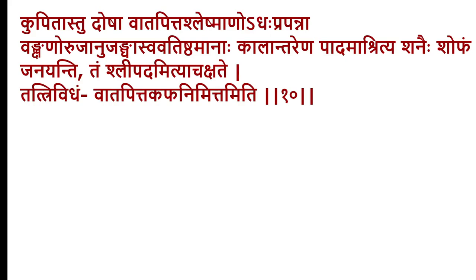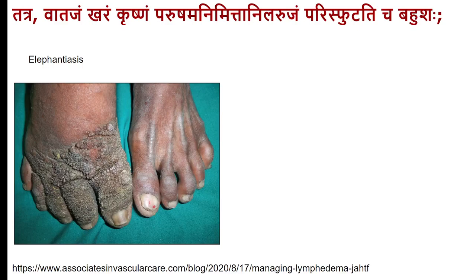Non-filarial lymphedema also has a similar course and hence should also be considered under Shlipada. Vataja Shlipada represents the later stages where the skin becomes rough, blackish, and may rupture producing gangrene-like complications — the 'elephant skin' (Hasticharma) stage, comparable to the skin of elephants. This is the chronic stage of lymphedema taking more than six months to develop.